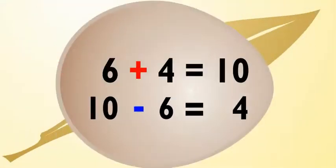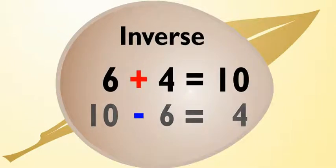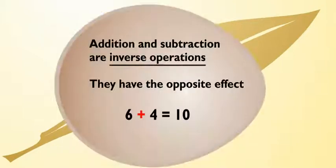Cool. Addition and subtraction are inverse operations. Inverse? That means they have the opposite effect. They can undo each other. When you add two numbers, you get a sum. When you take one of the numbers away from the sum, you get the other number.